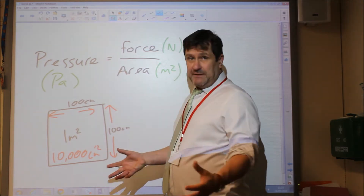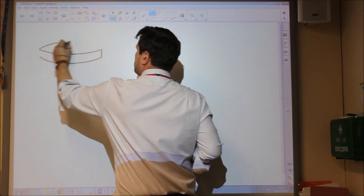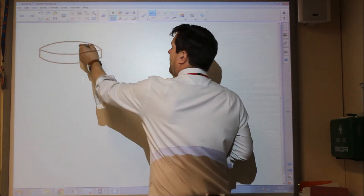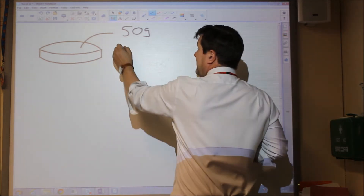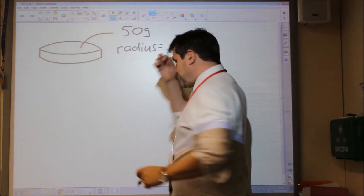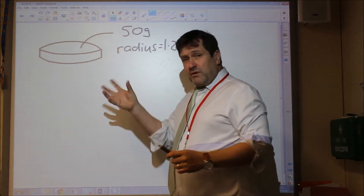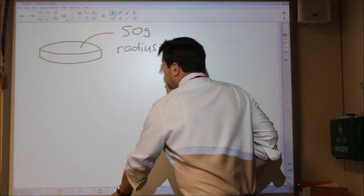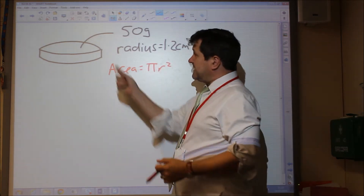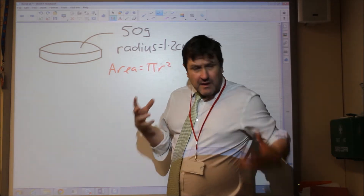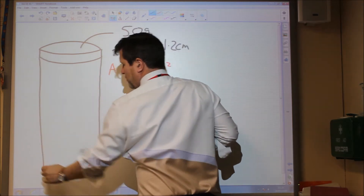Typical examples to do with pressure might be: if we took a coin, and we could say our coin has a mass of fifty grams, and the coin has a radius equal to one point two centimetres. From that, we can work out the area of the base of this coin, because the area is pi r squared. A question could be something like: calculate the pressure exerted on the ground by a stack of ten such coins.